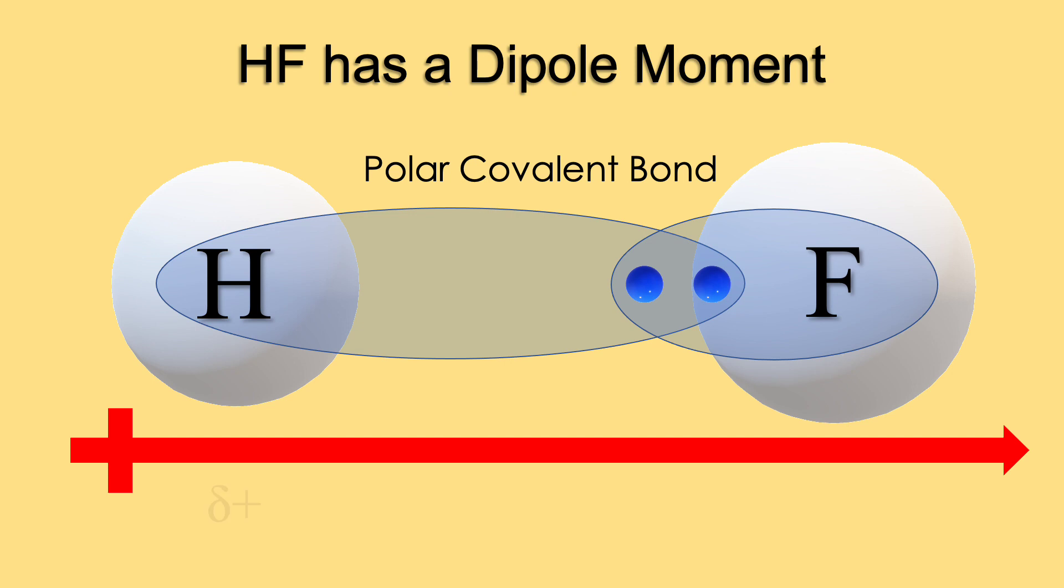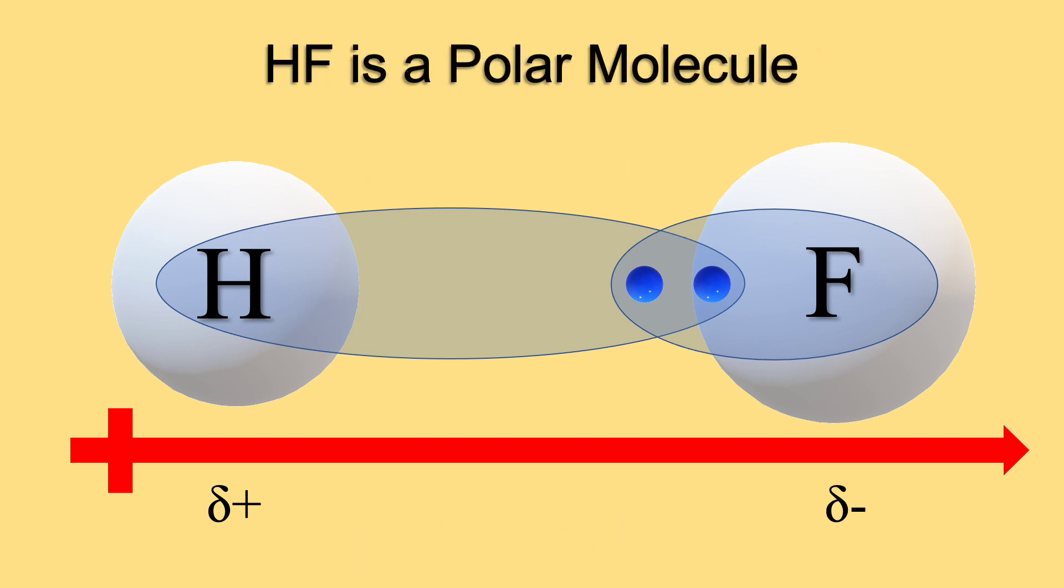We can add a delta-positive notation on hydrogen to indicate an area of less electron density, and a delta-negative notation near fluorine to indicate an area of high electron density. These are called partial positive and negative charges, and not ions. This is an example of a diatomic molecule with one dipole moment. We can call this bond a polar covalent bond, and conclude that HF is a polar molecule.